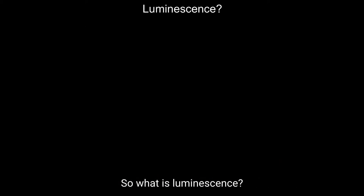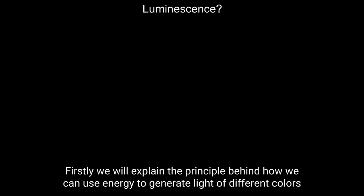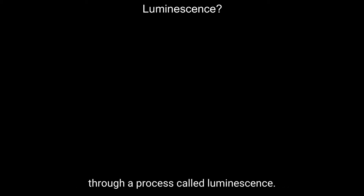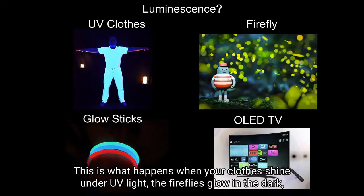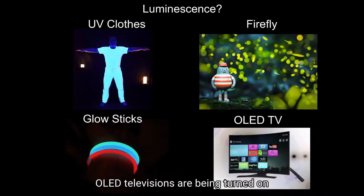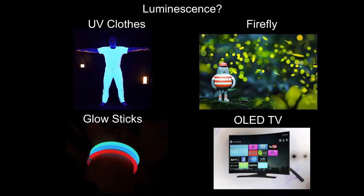So what is luminescence? We will explain the principle behind how we can use energy to generate light of different colors through a process called luminescence. This is what happens when your clothes shine under UV light, when fireflies glow in the dark, when glow sticks illuminate at a party, or when OLED televisions are being turned on.